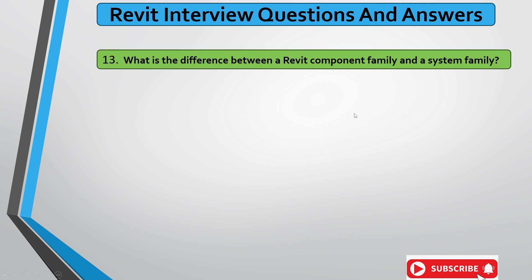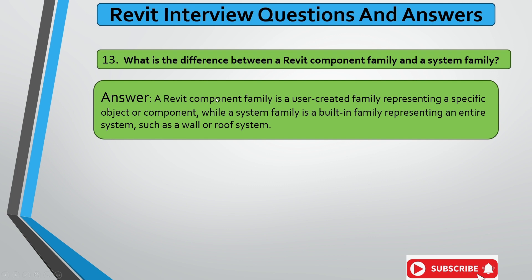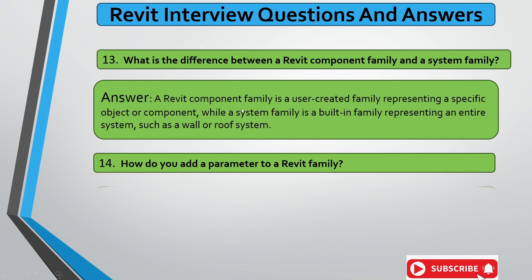The next question is: what is the difference between a Revit component family and a system family? A Revit component family is a user-created family representing a specific object or component. A system family is a built-in family representing an entire system, such as walls or roofs. System families are built into Revit's templates, while component families are created separately by the user.